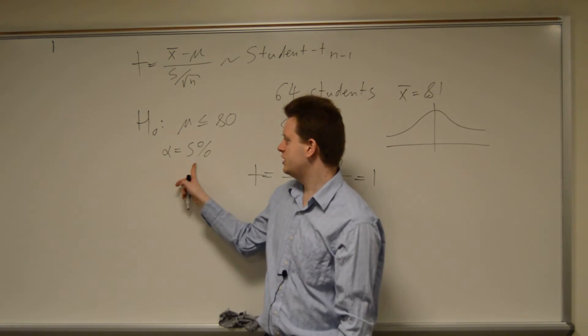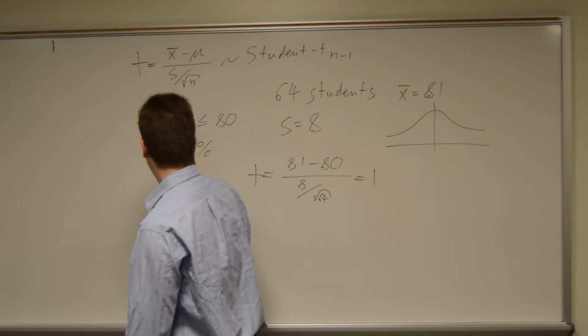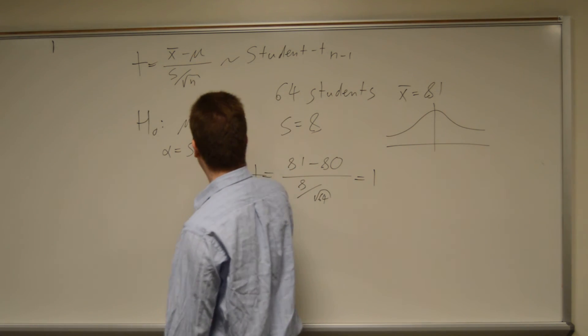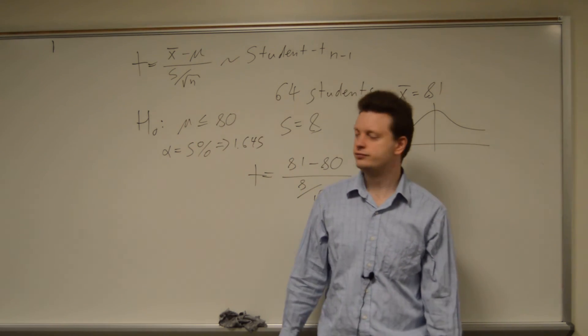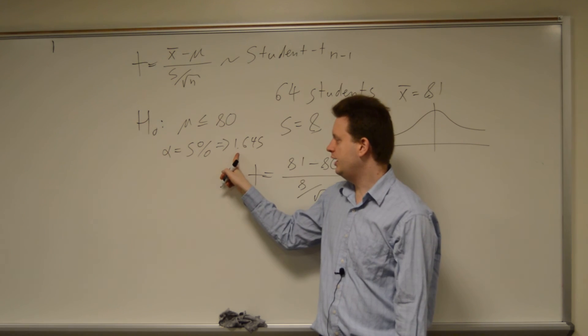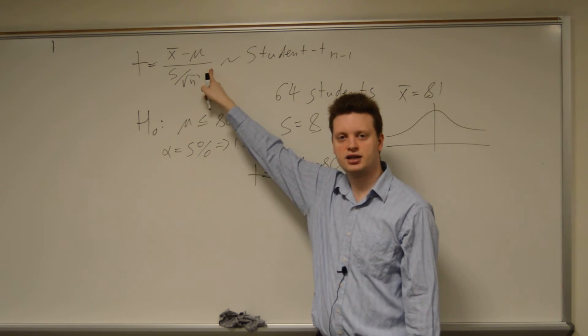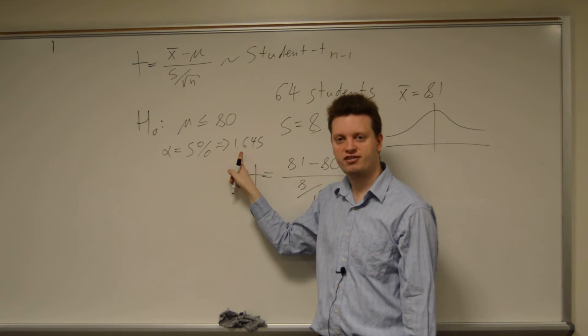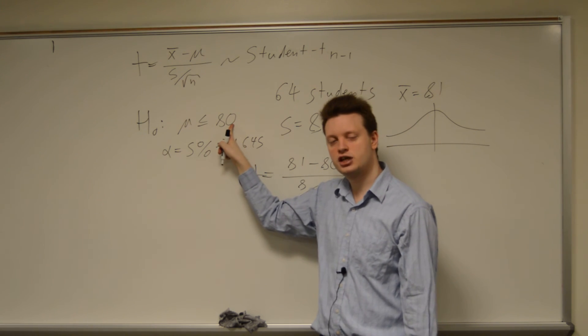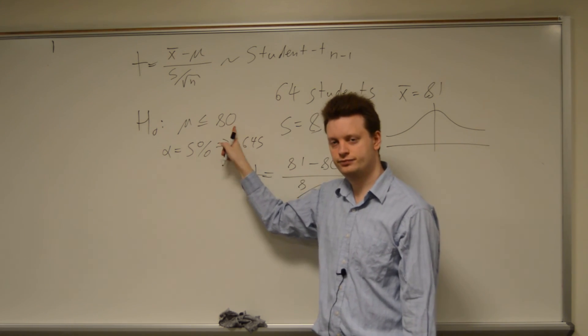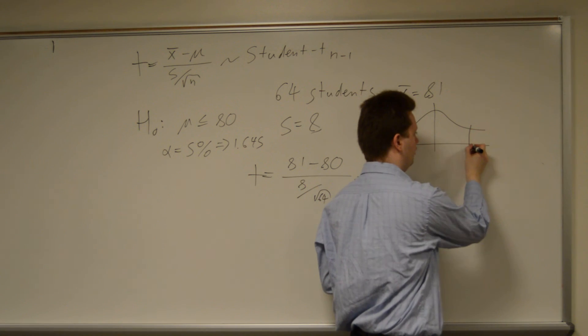So what is this 5% threshold in the standard normal table? Well, this threshold is 1.645. Meaning, if the value I get from the t-statistic is larger than 1.645, then I will have a rejection of this hypothesis. Well, let's look. We get a value of 1. So this is the alpha value, 1.645.